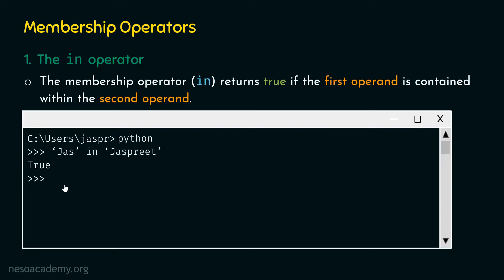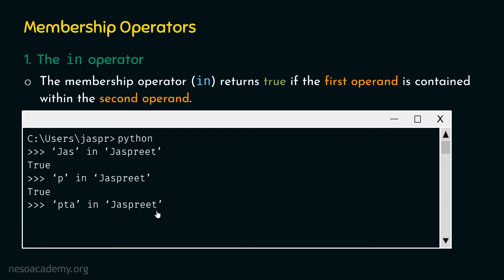Let's type one more command: `p in jaspreet`. This character is contained within this sequence, so `in` operator will return true. Now, what if we type `pta in jaspreet`? This sequence is not contained within this sequence — I'm talking about the exact sequence, not the individual characters. P, T, and A are all in the string, but `pta` as an exact sequence is not, so `in` operator returns false.